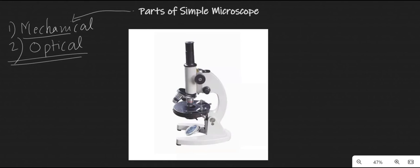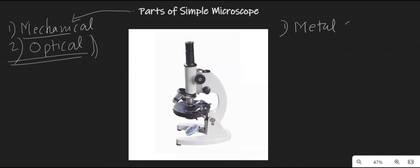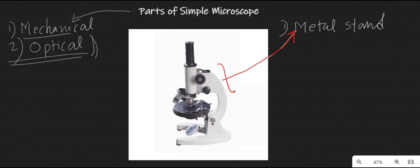Mechanical parts are those parts which support the optical parts and help in the adjustment for focusing the object. The first mechanical part is the metal stand. The metal stand is a heavy base plate and vertical rod fitted together, which provides support and stability to the other parts of the microscope, holding all the parts together.